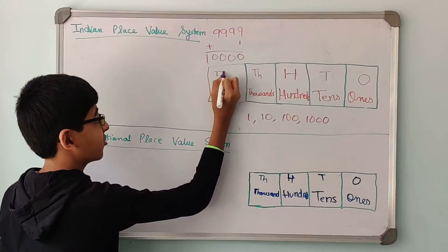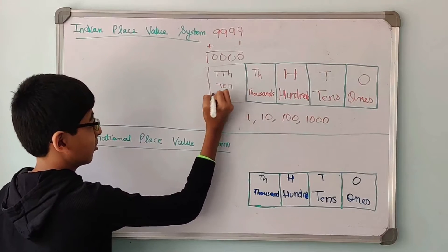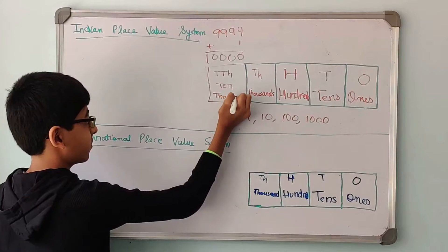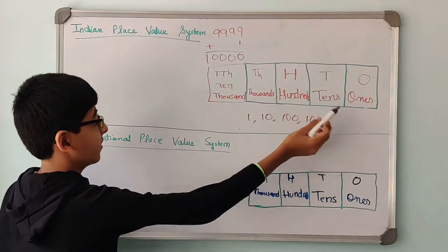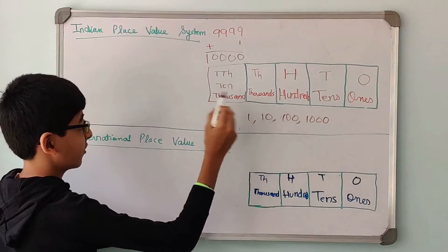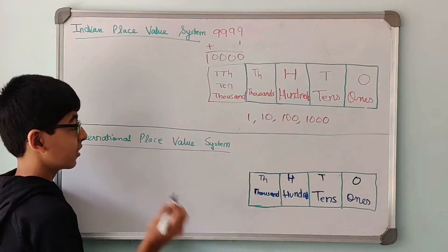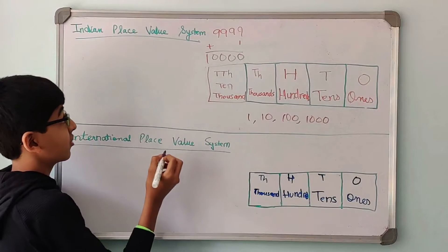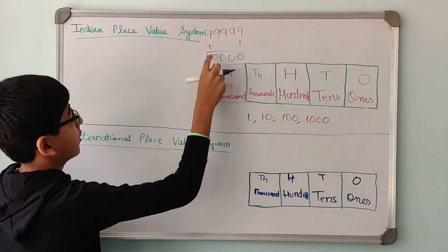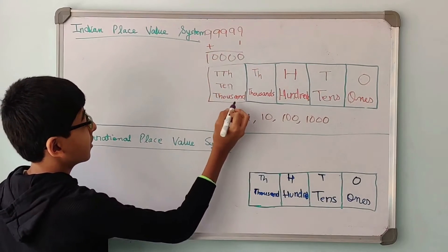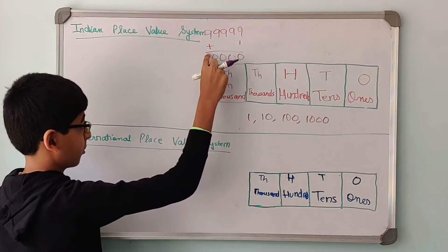10,000 is written as TTH in short. So the first 5 places are: 1s, 10s, 100s, 1,000s, and 10,000s. 10,000 is also common for both systems. After this, the numbers change. The highest number in the 10,000s is 99,999.